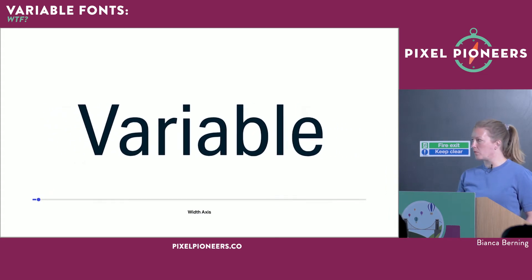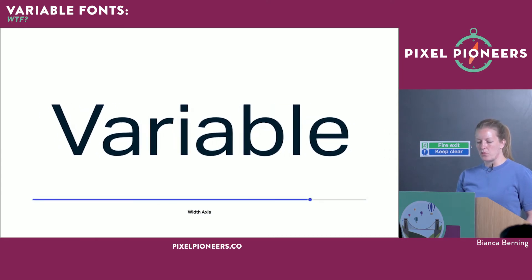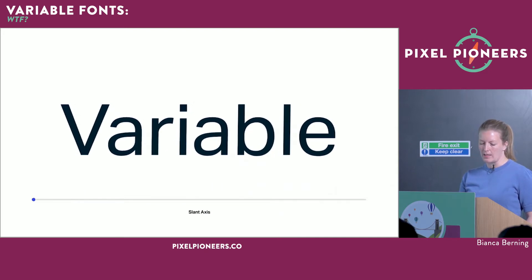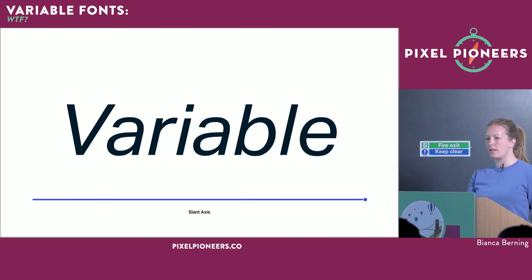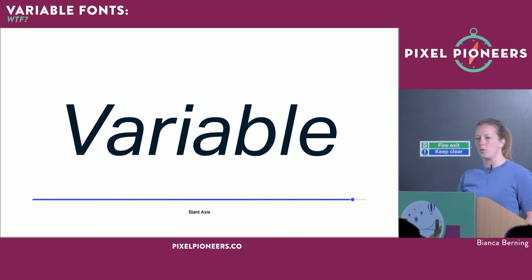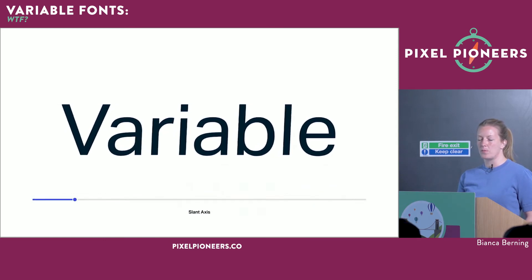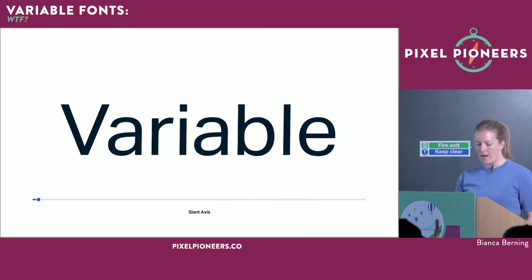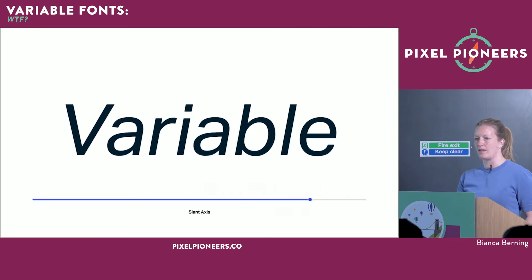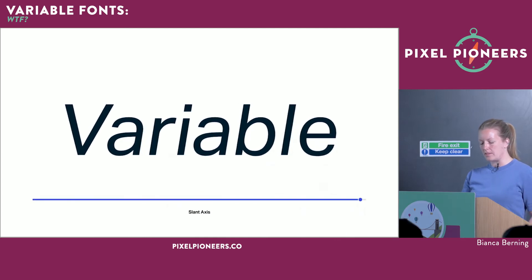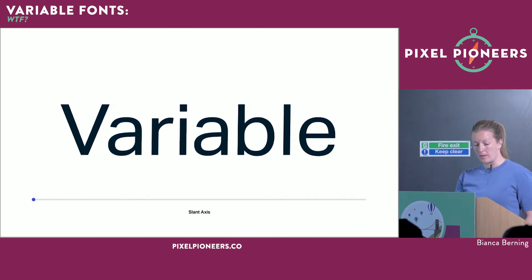The third axis defined in the specification is the slant axis, which is not as common but quite useful. This applies when you have uprights and italics in the same design space and want to access them — perhaps a type designer made a very inclined italic at 40 degrees and you want to define your own version of that slant. It's not used as much as the width and weight axes, but it's there.